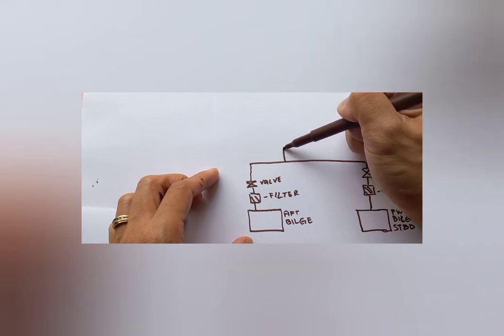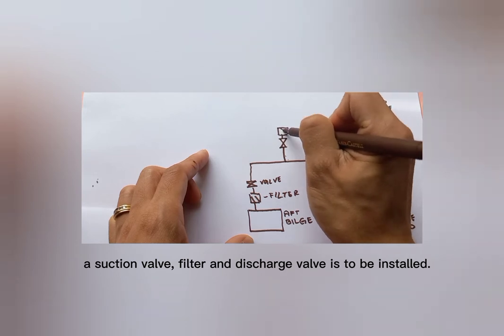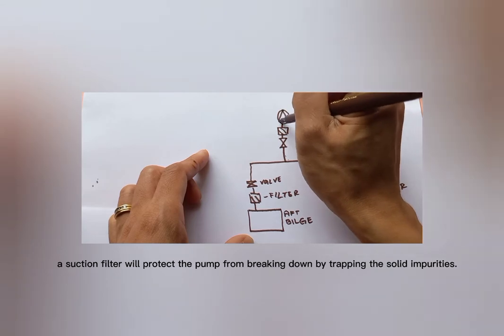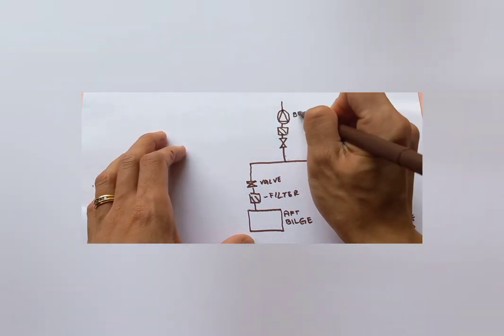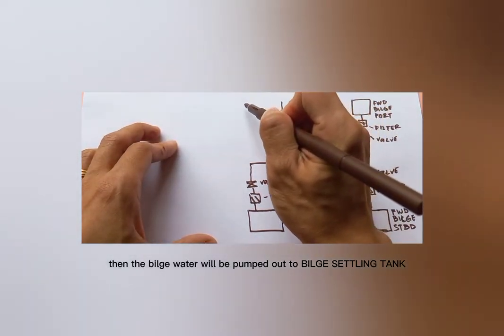To suction the water from bulge tank, we will need a pump, a suction valve, filter, and discharge valve to be installed. A suction filter will protect the pump from breaking down by trapping the solid impurities. Then the bulge water will be pumped out to bulge settling tank.